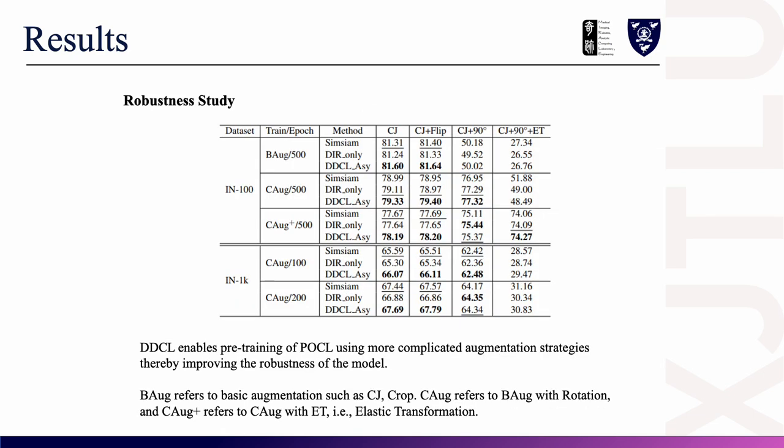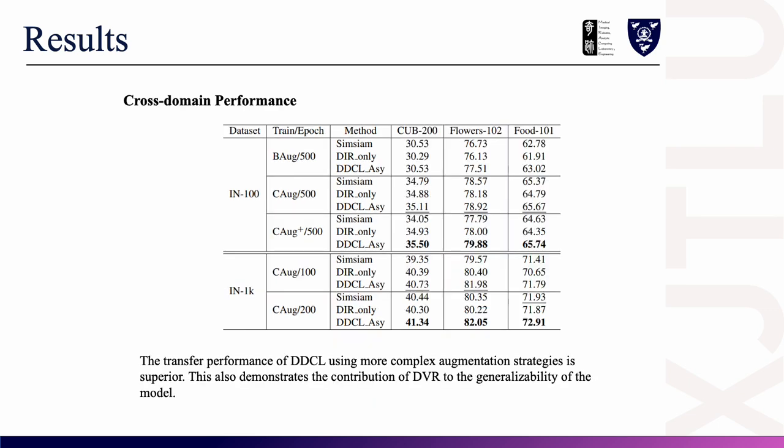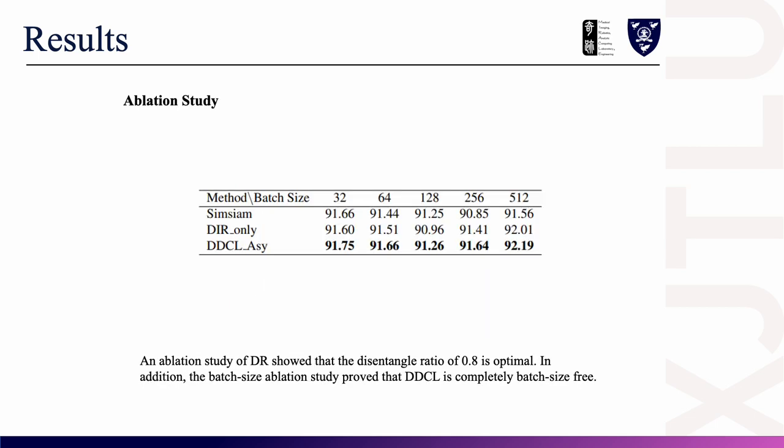In the robustness study, we found that DDL can improve the robustness of a model by using more complicated data augmentation strategies. In our study on transfer learning, we found that DDL with complicated data augmentation strategies can significantly improve the generalization ability of the model. We also performed ablation studies to explore batch size selection, proving that DDL is completely batch-size-free.